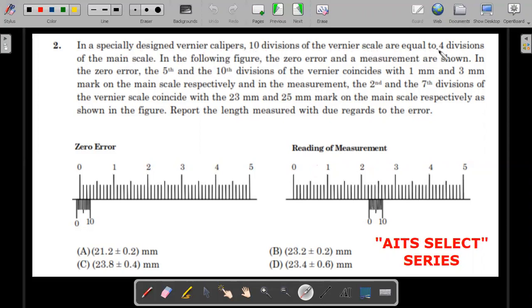In the following figure, the zero error and measurement are shown. This is the zero error diagram on the left side of your screen, and this is the measurement diagram. In the zero error diagram, the 5th and 10th divisions of the Vernier coincide with 1st and 3rd mm mark of the main scale respectively. In the measurement diagram, the 2nd and 7th divisions of the Vernier scale coincide with the 23 and 25 mm mark on the main scale respectively. Report the length measured with due regards to the error.